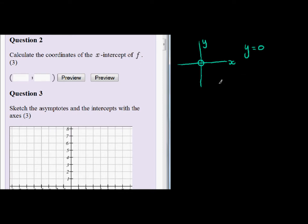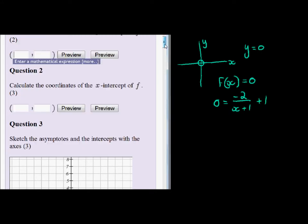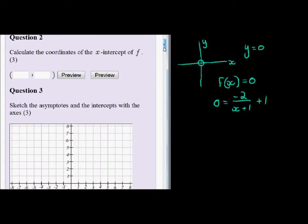Making y equal to 0 means that f(x) equals 0. That means 0 equals -2 over (x+1) plus 1. Is that correct? There we go.